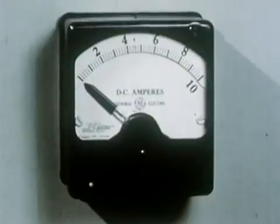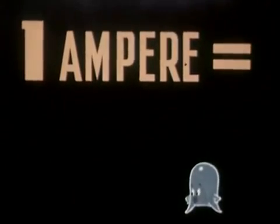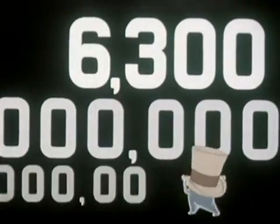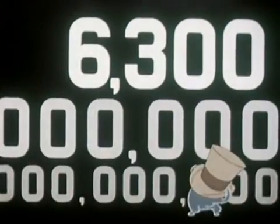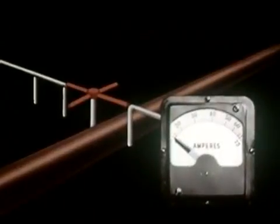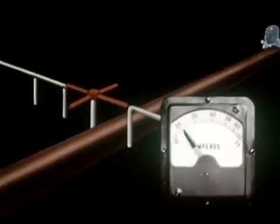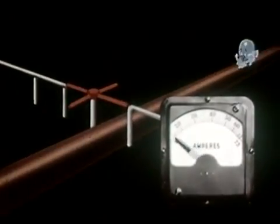The unit of electric current is the ampere. One ampere — now hold on to your hat — is six billion, 300 million, billion electrons passing any given point in one second. Current, or amperage, then is the number of electrons that pass a given point in a given time.